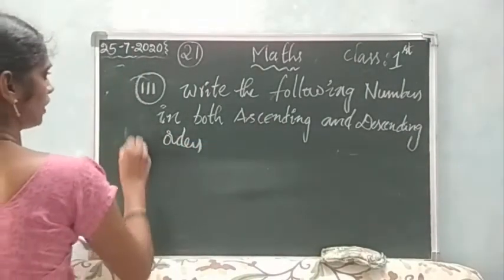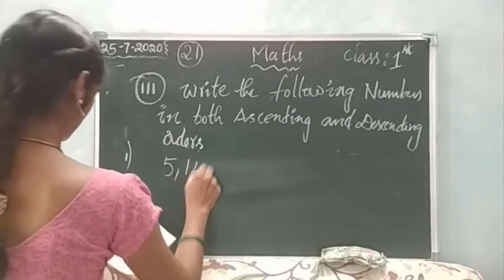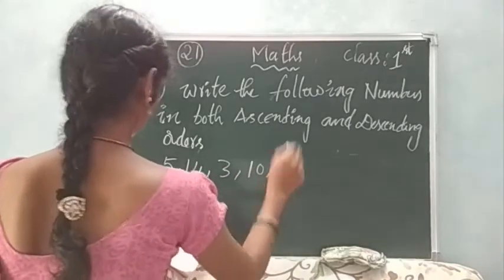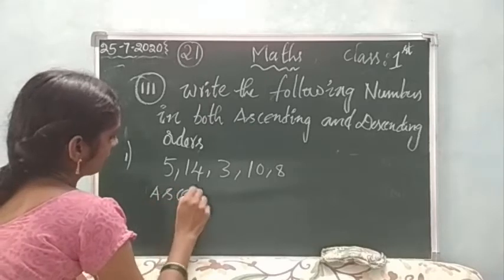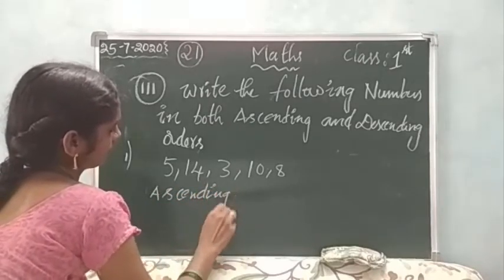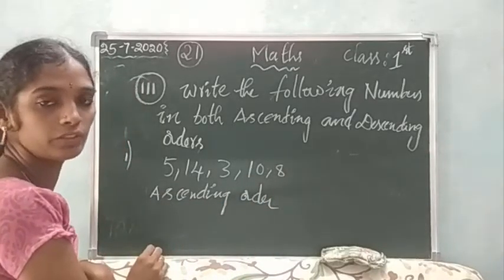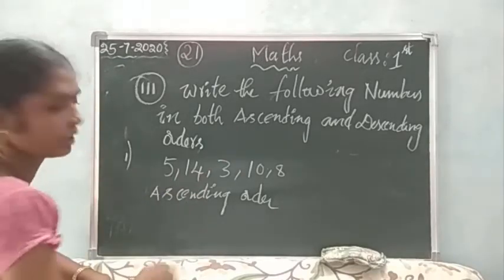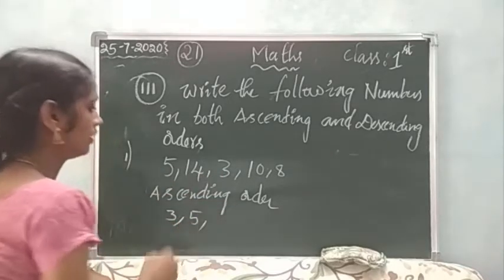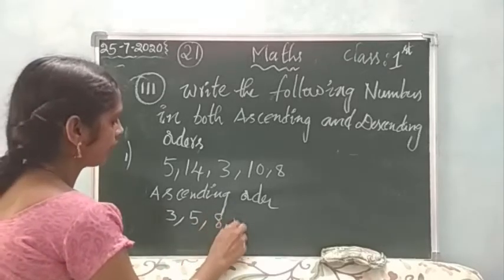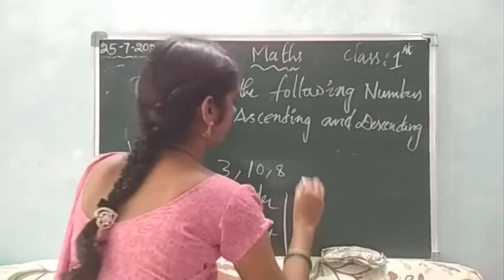I will give you the numbers 5, 14, 3, 10, and 8. In these numbers you can arrange in any order. First, the smallest number — please tell me the first smallest number. The smallest is 3, then 5, then 8, then 10. The last number is 14. This is the ascending order, and I can write here the ascending order.